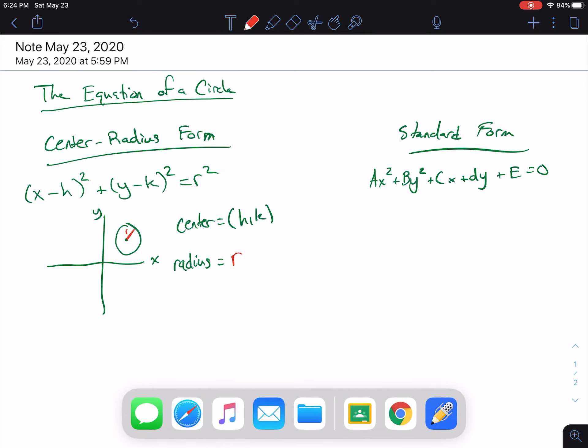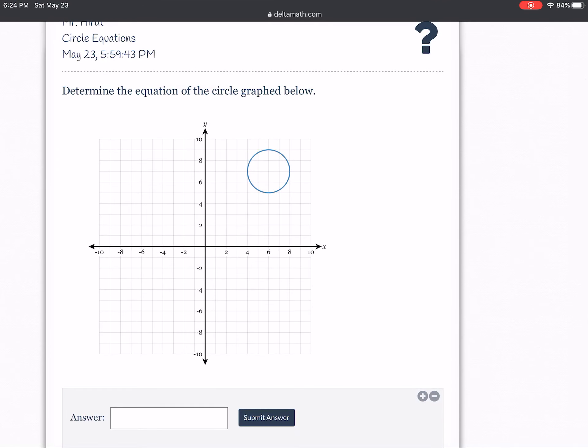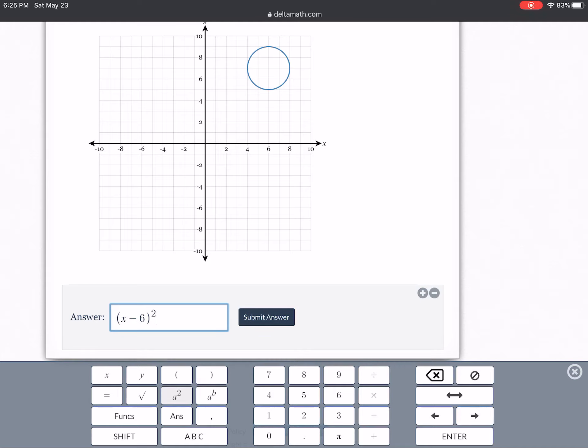So let's see what a question might look like. So here's a question that you might see. Determine the equation of a circle. So the first thing we need to do here as we look at this equation is we need to say, what is our h-coordinate? So we're going to start with x minus. Now we start with minus, but we may go to plus. The x-coordinate of the center is 6. So because it's a positive 6, we're just going to have x - 6.